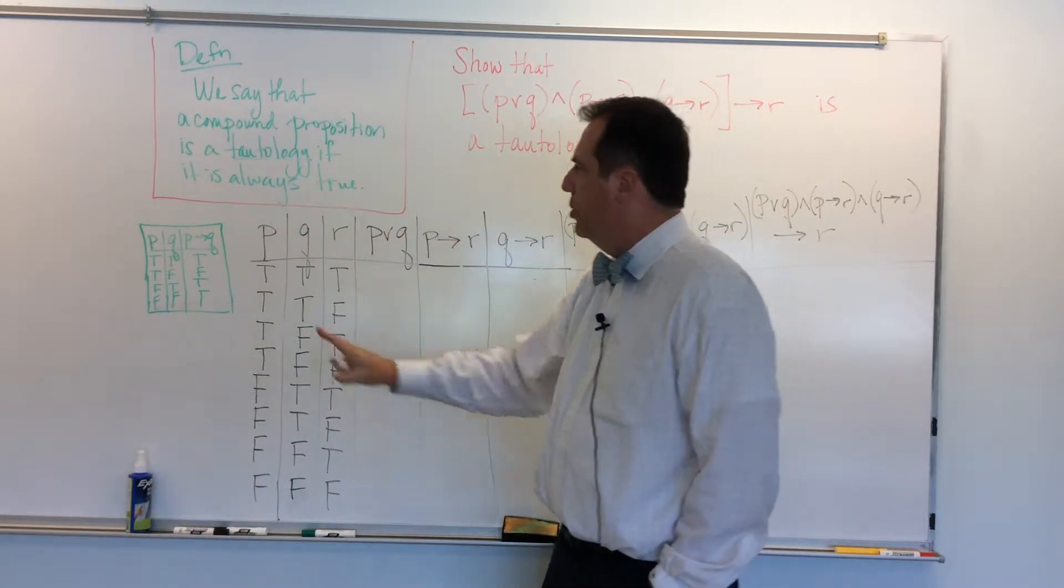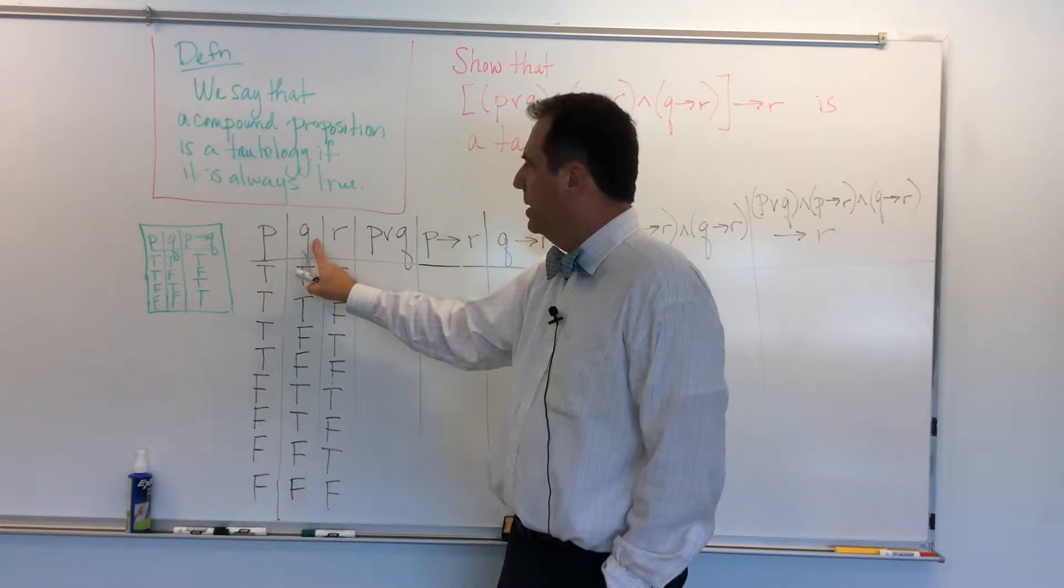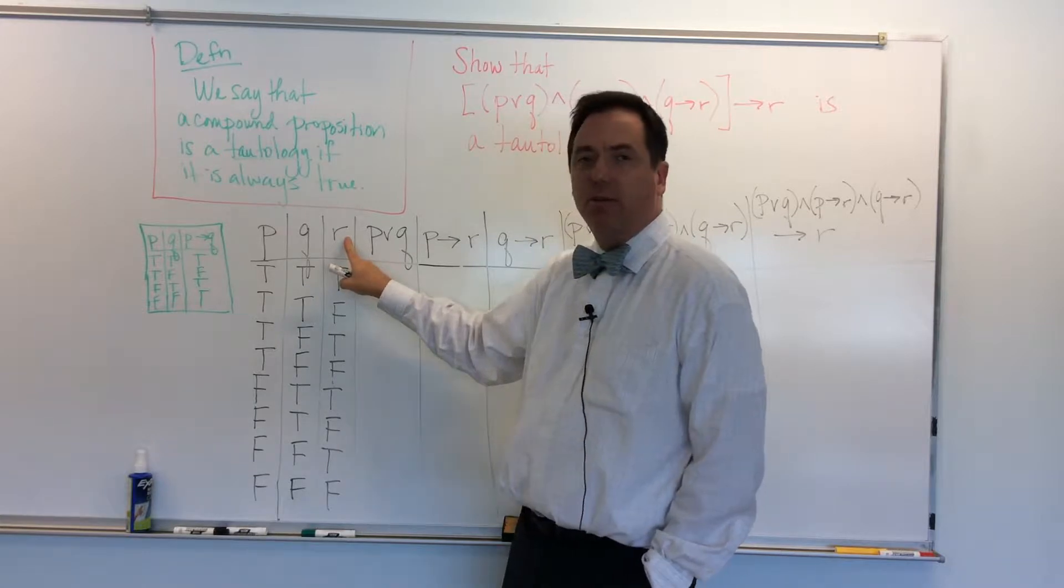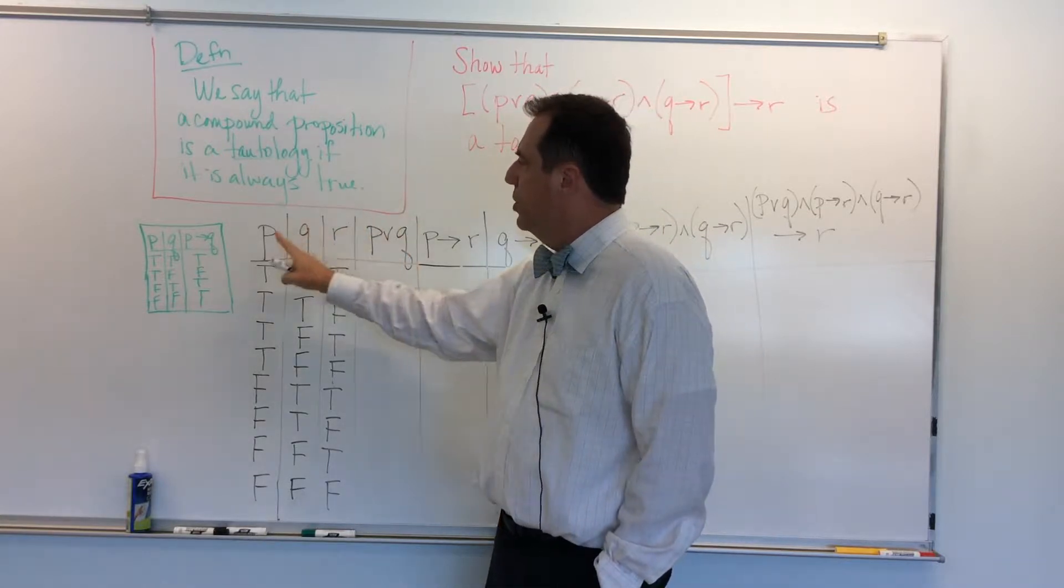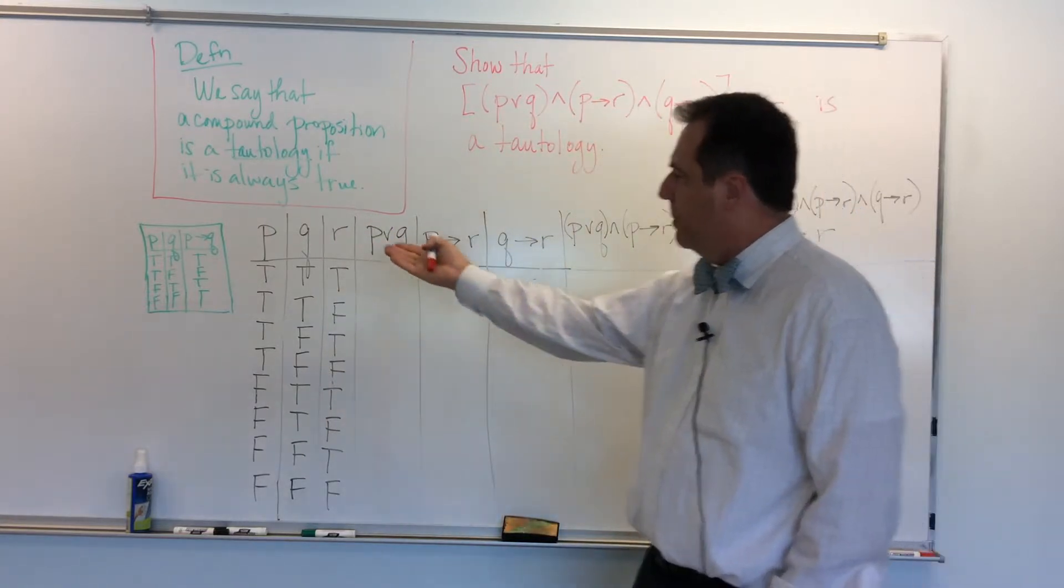Okay, so I have two possibilities here, true or false, two possibilities here, true and false, two possibilities here, true and false, and so two times two times two is eight. That's how I get eight, and I've written them out in a normal way.